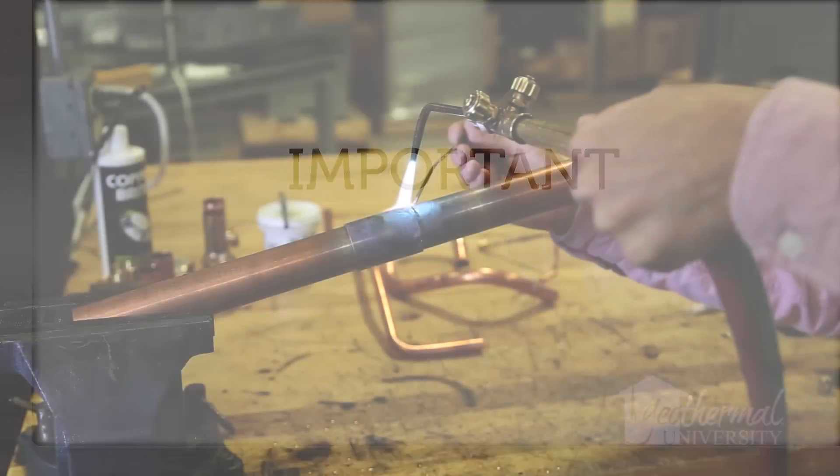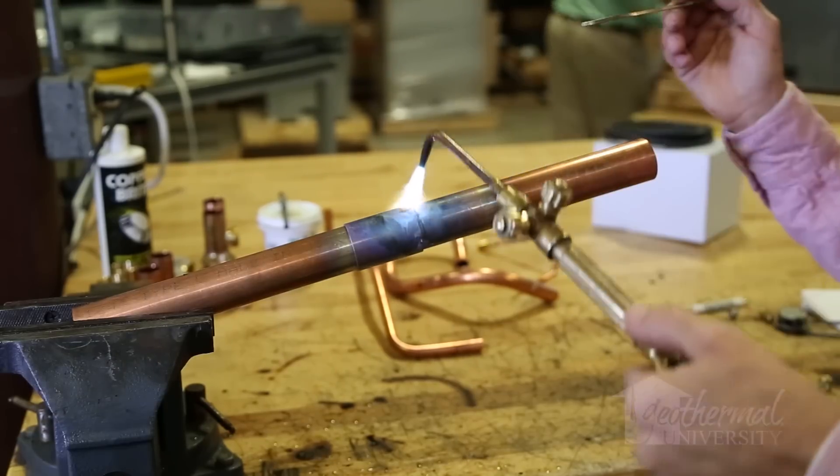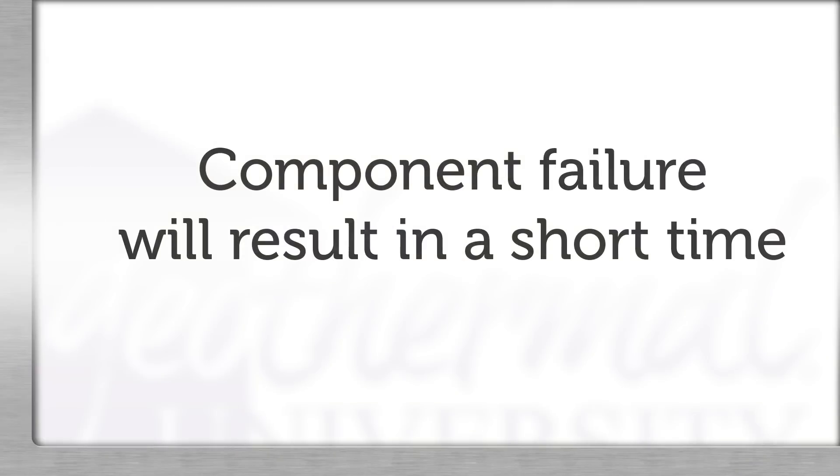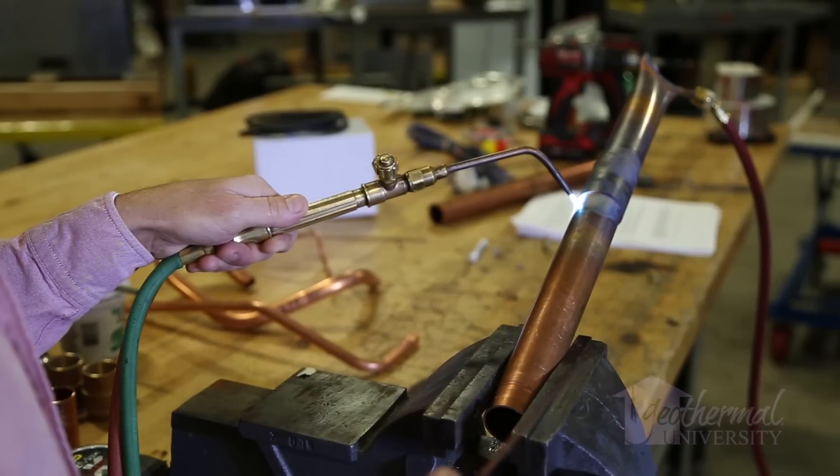If brazing is performed on a line set or system component and nitrogen is not used, component failures will result in a short period of time. This problem has long been an issue in brazing HVAC tubing.